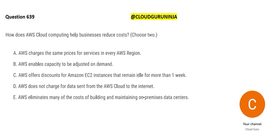The first option says that the prices are the same in every region, which is not true. The prices are not the same in every region. For example, if your AWS data center is in India — they recently opened one in Hyderabad — Indian data centers will be cheaper because the labor cost and cost of setting up and maintaining data centers is cheaper compared to the USA or Europe. So this statement is not true; prices fluctuate depending on whether data centers are in developed or developing countries.